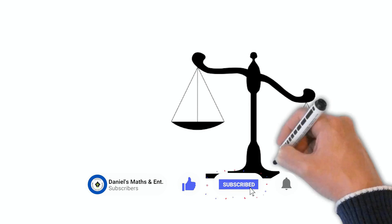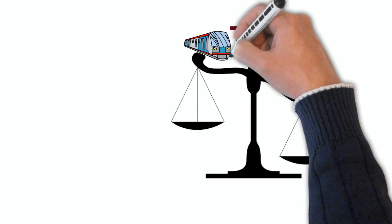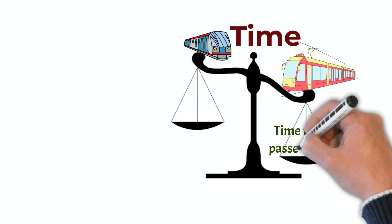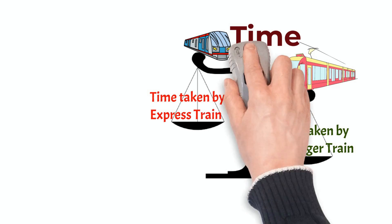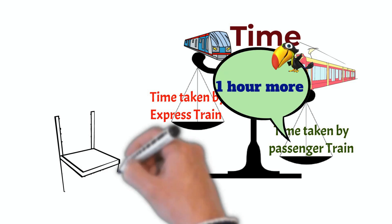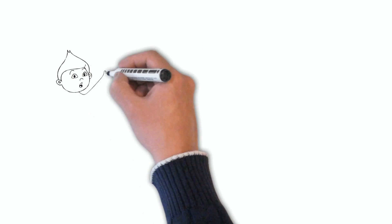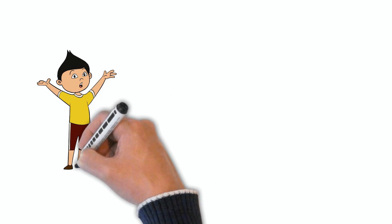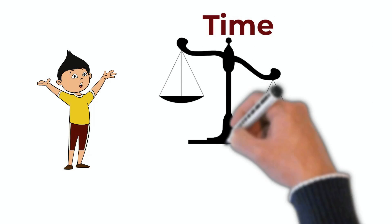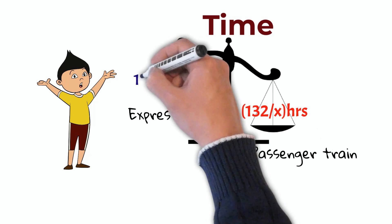Here we can see that the time taken by the express train is less than the passenger train — the passenger train takes one hour more than the express train. Since time is distance divided by speed, the time taken by the passenger train is 132 by x hours, and the time taken by the express train is 132 by x plus 11 hours.